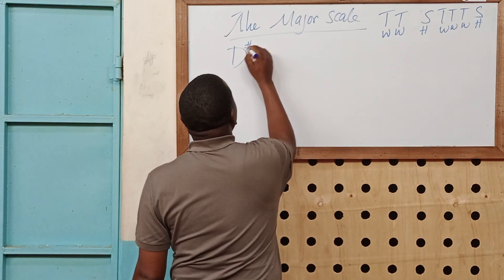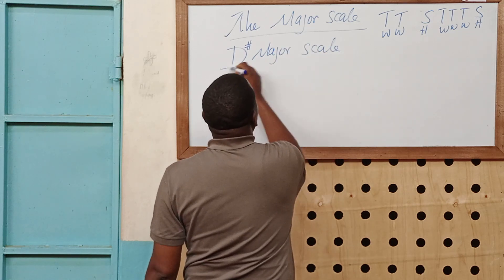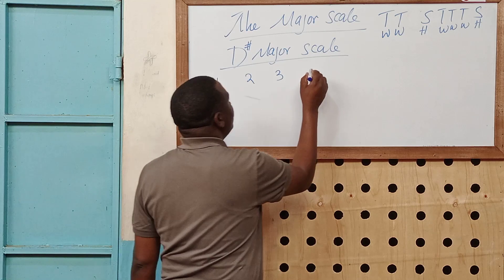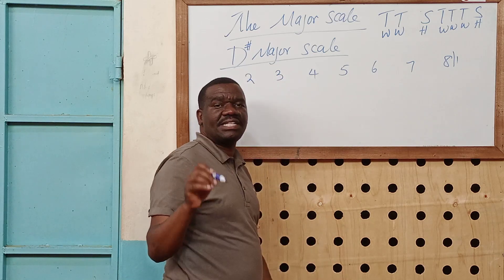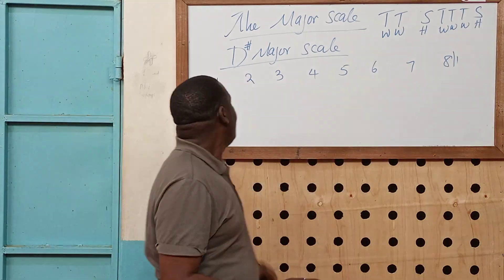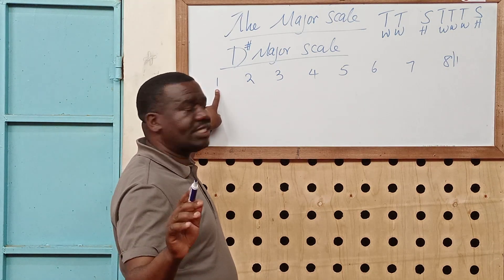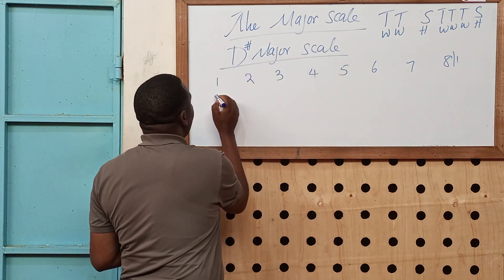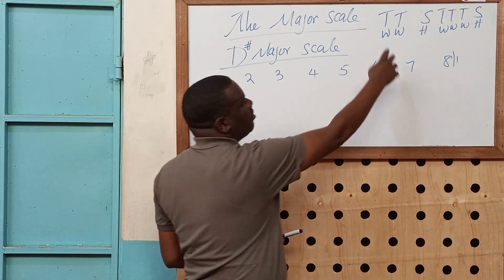D sharp major scale. As we agreed, our scale has eight notes: one, two, three, four, five, six, seven, eight stroke one — because the first note is repeated at the eighth position. That is why this is eight stroke one. Note number one, or the key note, or the root note, is given by the name of the scale. This is D sharp major scale, so the first note is D sharp.